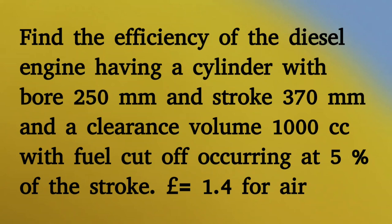Find the efficiency of a diesel engine having a cylinder with bore 250mm and stroke 370mm and a clearance volume of 1000cc, with fuel cut-off occurring at 5% of the stroke. Assume gamma is equal to 1.4 for air.